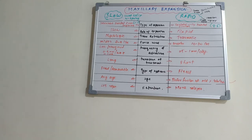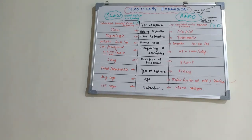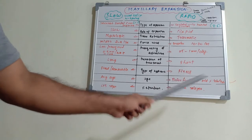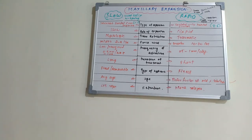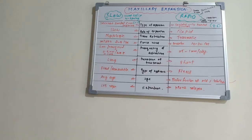Regarding the age group: slow expansion can be applied to any age group, but rapid expansion should be focused on age groups where the mid-palatal suture is not yet fused — it should be applied before the fusion of the mid-palatal suture. Regarding retention, there is less chance of relapse in slow expansion, whereas there are more chances of relapse in rapid expansion.